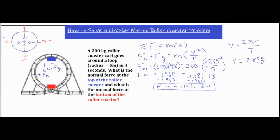Plugging in the radius of five meters and the period of four seconds: v = 2π times 5 divided by 4, which gives about 7.85 meters per second. Plugging that into the formula, I squared 7.85, divided by five, then multiplied by 200, getting 3081.13. On the other side, Fn plus Fg, where Fg equals mg = 200 times 9.8 = 1960 N. Subtracting 1960 from both sides gives Fn = 1121.13 newtons.